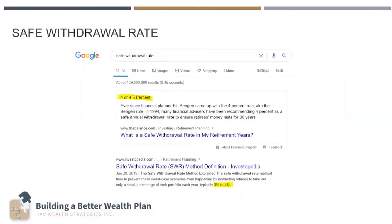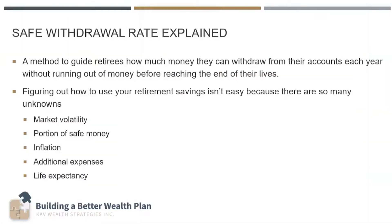I tell people to go ahead and Google the safe withdrawal rate. They will see that the safe withdrawal rate is really only four to four-and-a-half percent — in fact, it's probably closer to three percent. What is the safe withdrawal rate? It's the method proven empirically that helps guide retirees as to what they can withdraw from their wealth at retirement, around age 65. Why is it so low? Because most people think they can access around eight percent a year.